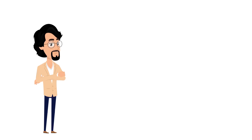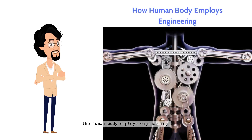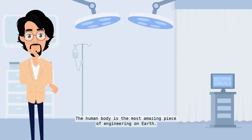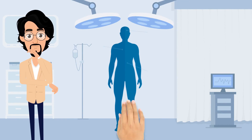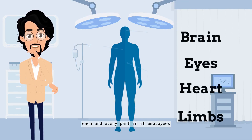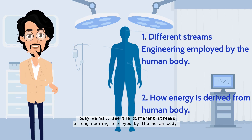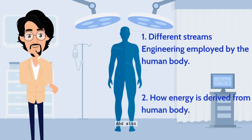Hello everybody, welcome to today's video. Today we will take a look at how the human body employs engineering. The human body is the most amazing piece of engineering on earth — it is a well-developed machine, and each and every part in it employs engineering. Today we will see the different streams of engineering employed by the human body.